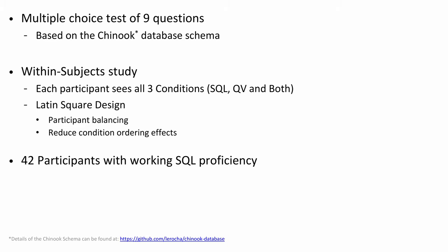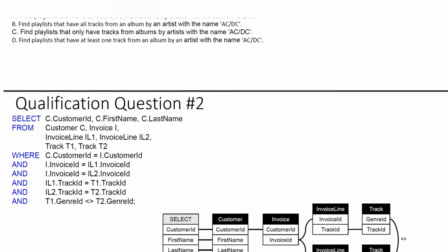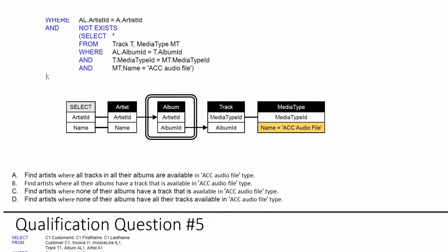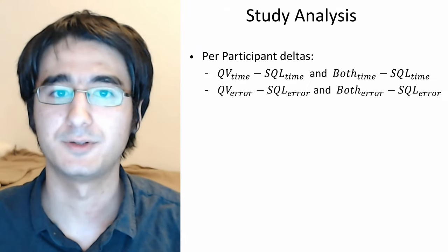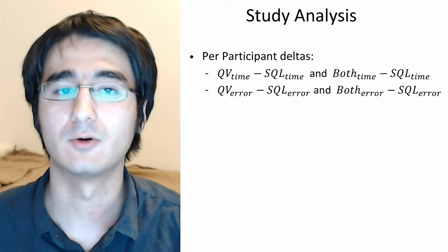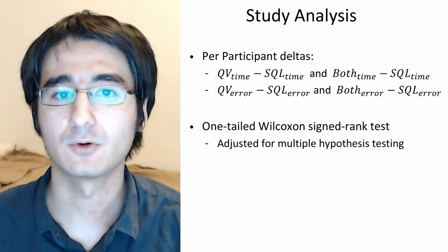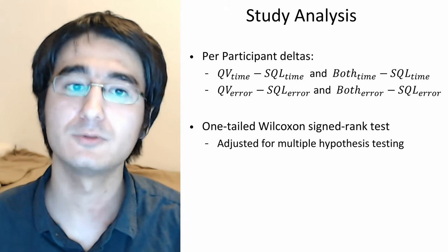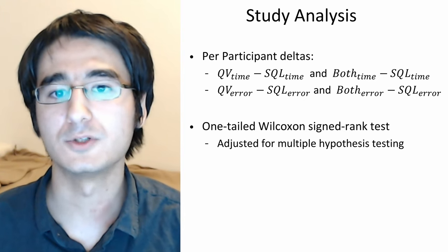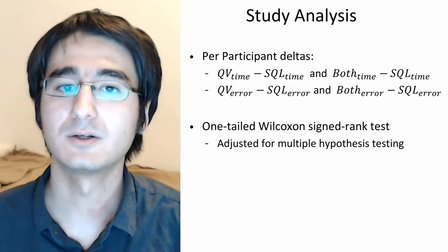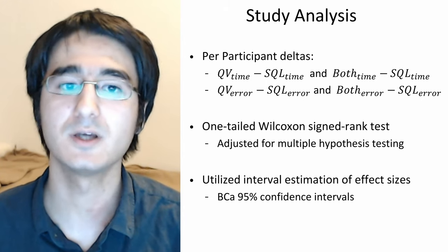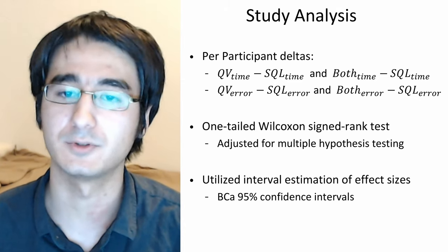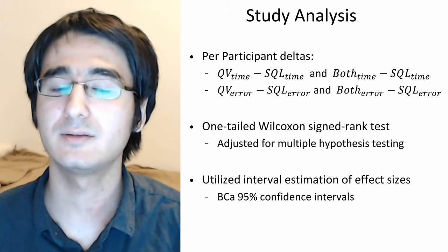We recruited 42 participants, all from the US. All participants had to pass a separate SQL qualification test of six questions to ensure working proficiency with SQL. We hypothesized that participants would be faster and more accurate in the QueryVis and both conditions than in the SQL condition. After collecting data, we calculated per-participant deltas in time and error for the QueryVis and both conditions with respect to SQL. Because the time and error data did not follow a normal distribution, we used non-parametric statistical tests — specifically a one-tailed Wilcoxon signed-rank test, adjusted for multiple hypothesis testing. We also performed interval estimation of effect sizes through bias-corrected and accelerated 95% confidence intervals.